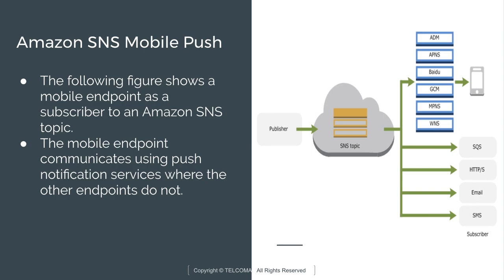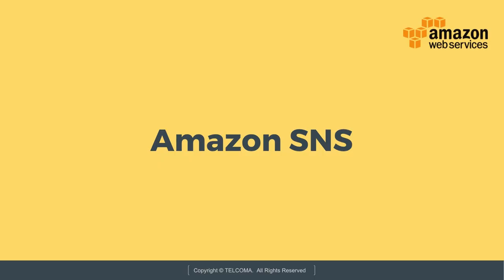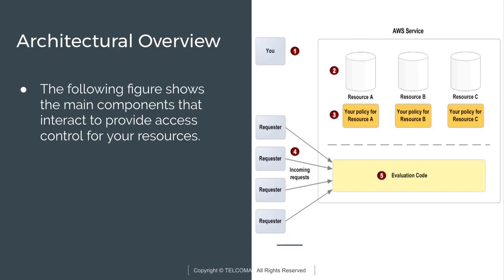Only the mobile device can communicate using push notification services, whereas SQS, HTTP, email, and SMS can communicate directly with the topic or publisher. This is how Amazon Simple Notification Service works.